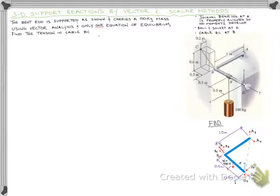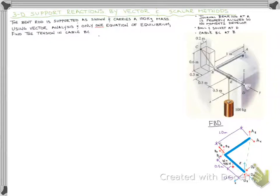Welcome to our example of finding reactions in a three-dimensional system. We have a bent bar going from A, B, to D. The bar carries a mass of 100 kilograms, which is 981 newtons. It's supported at D by a ball and socket, by a cable at B from B to C, and has a journal bearing at A. The problem states that the journal bearing is properly aligned — no moments — so we only get reactions in the Z and Y directions.